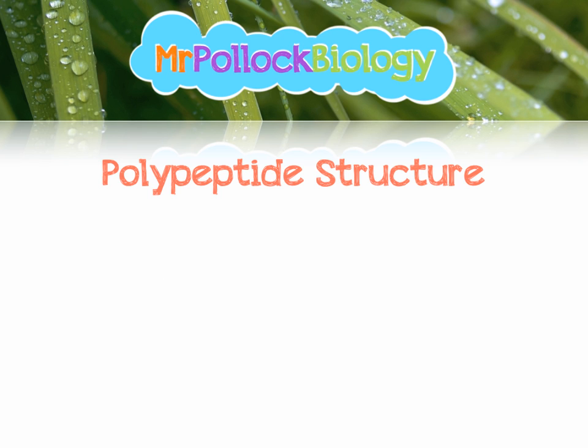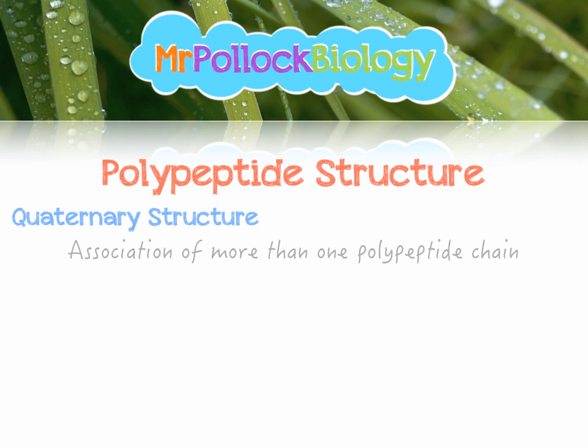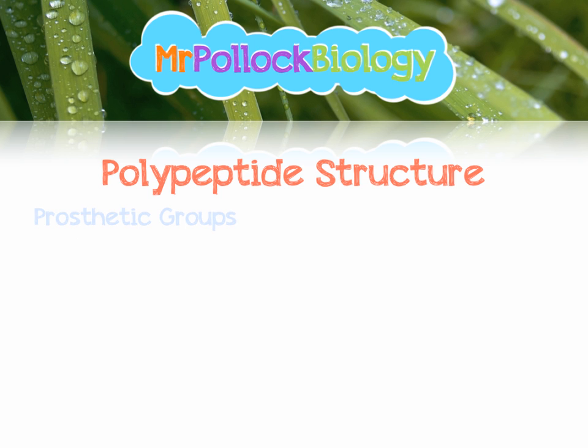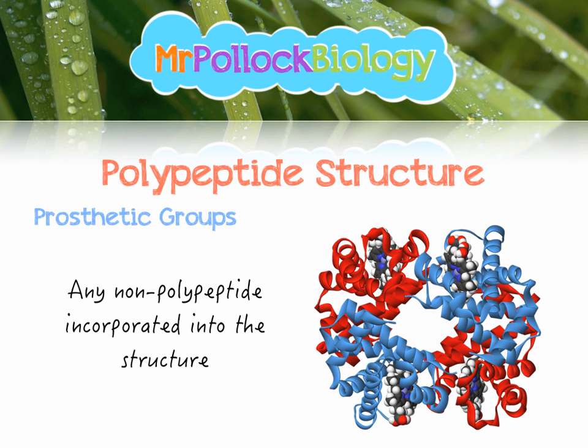The first three levels of protein structure are present in every single protein. Quaternary structure is not present in all proteins — it's where more than one polypeptide chain is associated together. They're not part of the same chain, but they're strongly attracted to one another. Hemoglobin is a great example, exhibiting both quaternary structure and prosthetic groups. It has four subunits in total — two blue and two red polypeptide chains — held together as its quaternary structure.